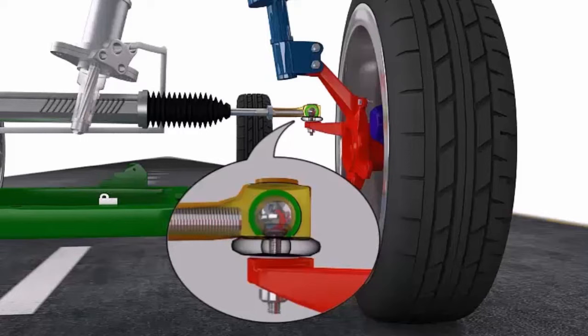The tie rods transmit force from the steering rack and pinion to the steering knuckle, which causes the wheels to change direction. As a result of heavy steering impacts or normal wear,